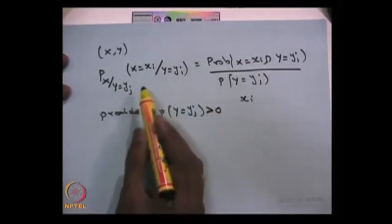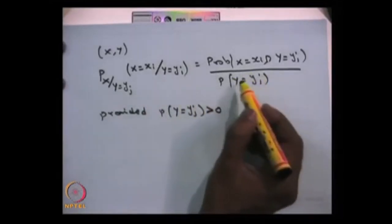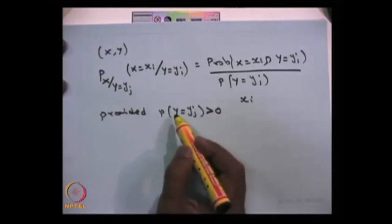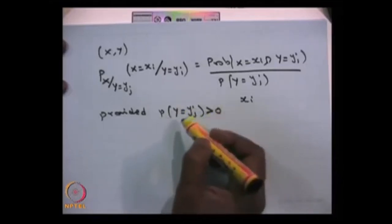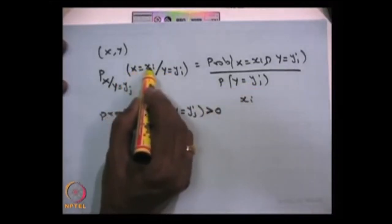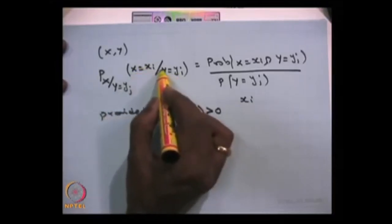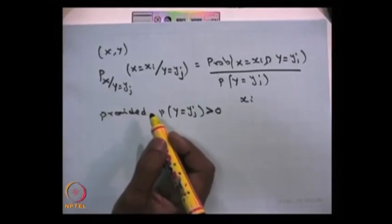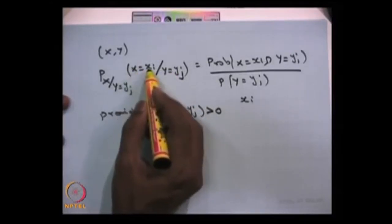This is analogous to how you compute conditional probability over an event — here the event is Y equals Yj. As long as this event has strictly positive probability (not an impossible event), we can ask: given this has already happened, what is the probability that X takes the value Xi? Our interest is still to find the distribution of X, given the situation that the other random variable Y takes value Yj. From the sample space omega, you end up with a reduced sample space corresponding to Y equals Yj, and from this reduced space you find the distribution of X for all possible values of Xi.